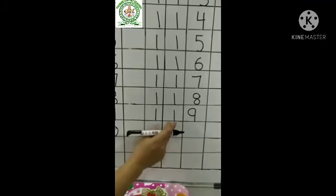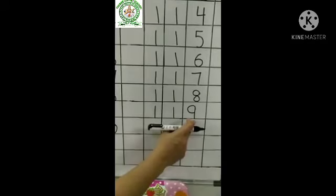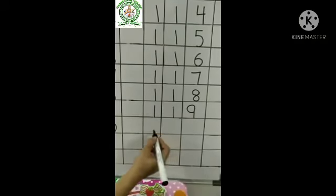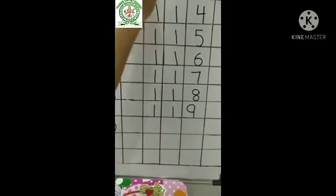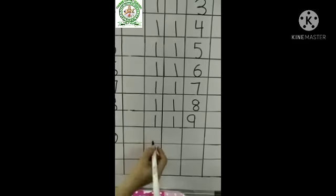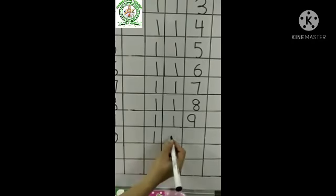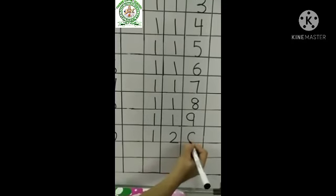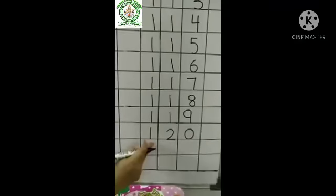So students, what come after 19? 19 ke baad kya aata hai? 20. So how many hundred? 120.